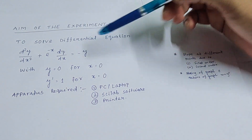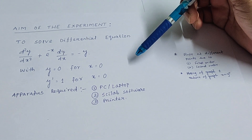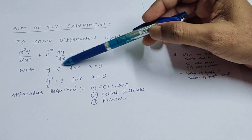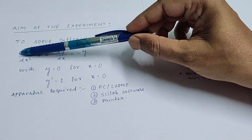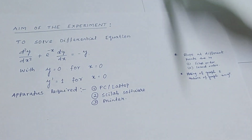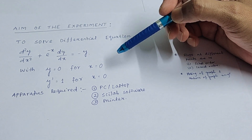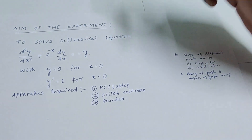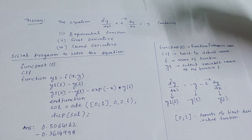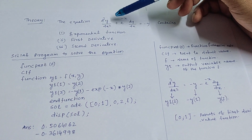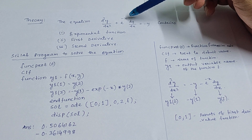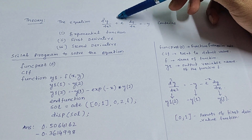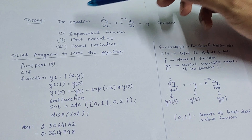From this equation we will learn how the slope at different points varies due to the first order differential equation as well as due to the second order differential equation. We also discuss the plotting of the graph and the nature of the graph between x and y double dash, or the second derivative. The equation d²y/dx² + e^(−x) dy/dx = −y contains an exponential function, a first derivative, and a second derivative.